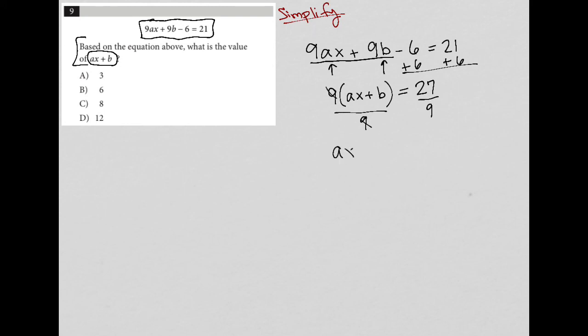Now I've successfully isolated AX + B. So AX + B equals 27 divided by 9, which is 3. Therefore, that is my correct answer.